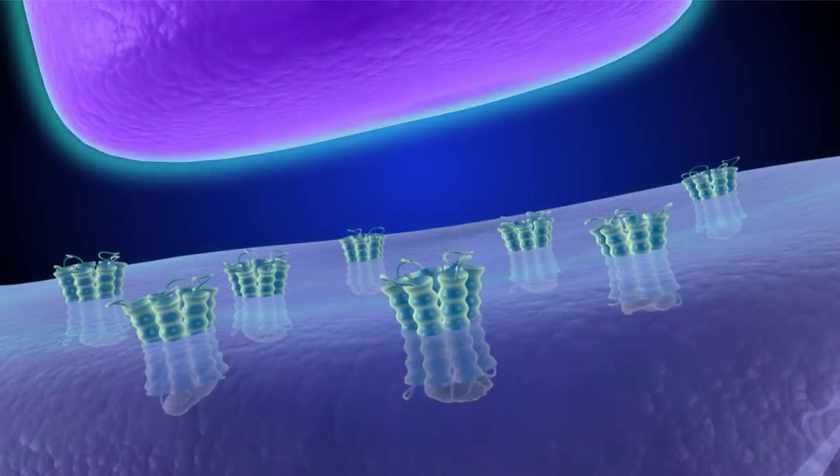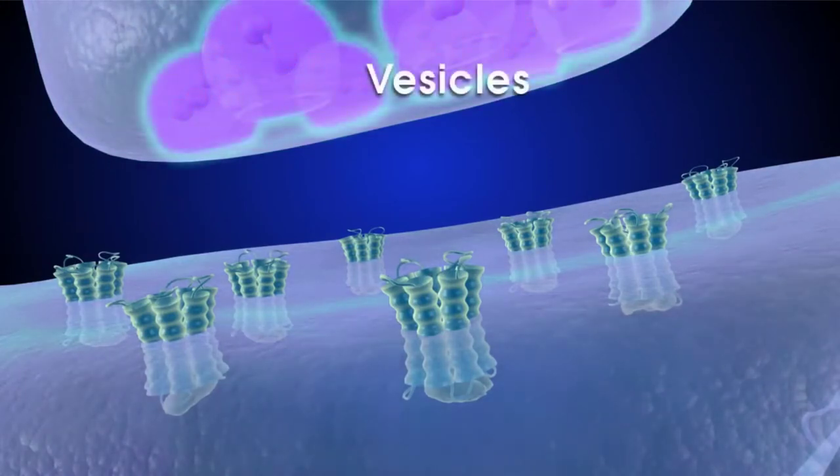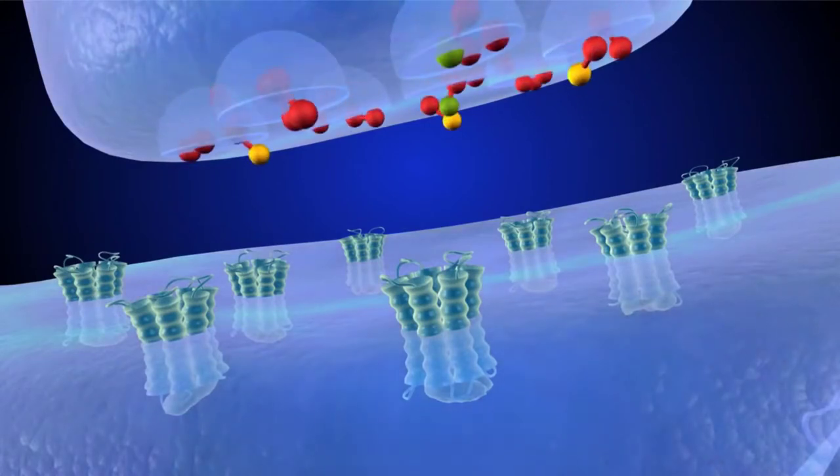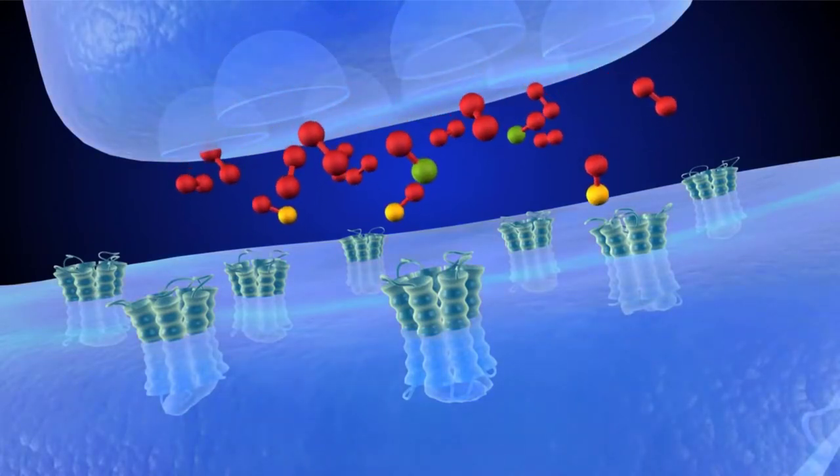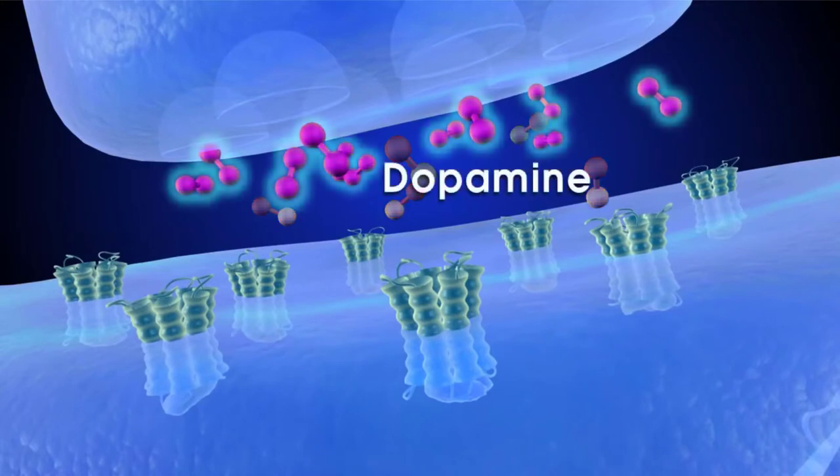The electrical signal in the presynaptic cell causes packets or vesicles which store neurotransmitters to migrate to the end of the cell, merge with it, open up, and release the neurotransmitters into the synapse. In the limbic system, there are many brain cells designed to release the neurotransmitter dopamine.